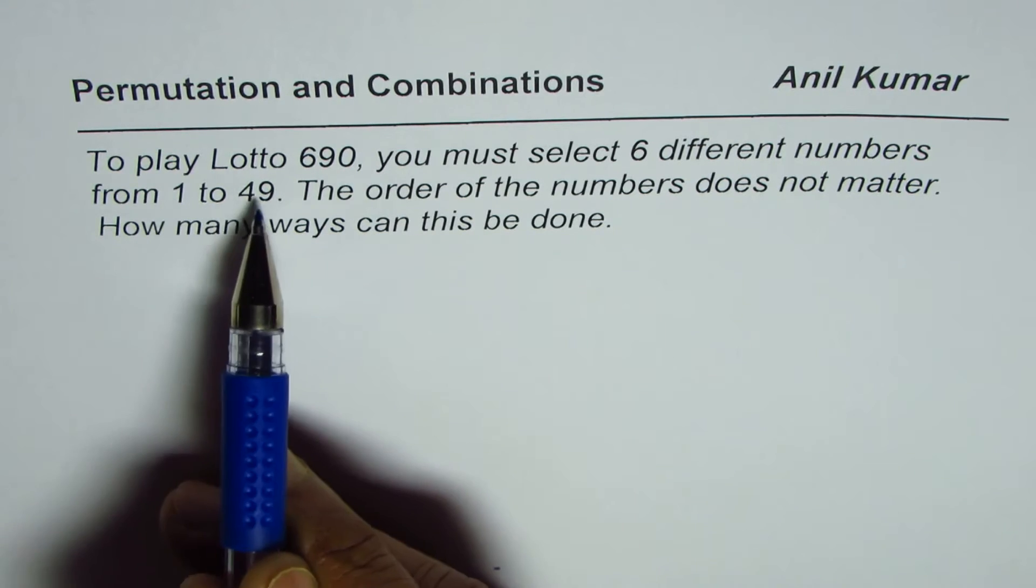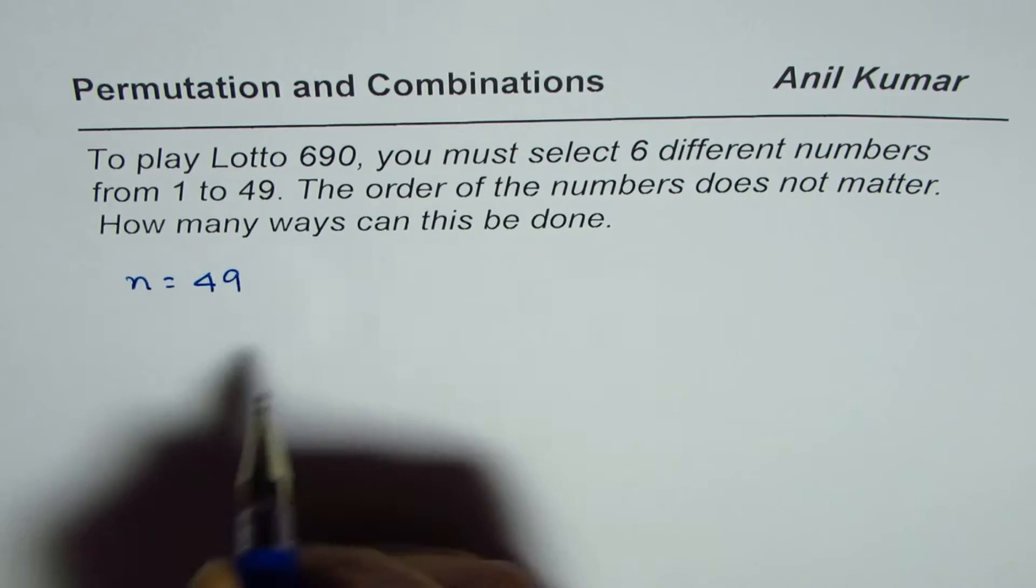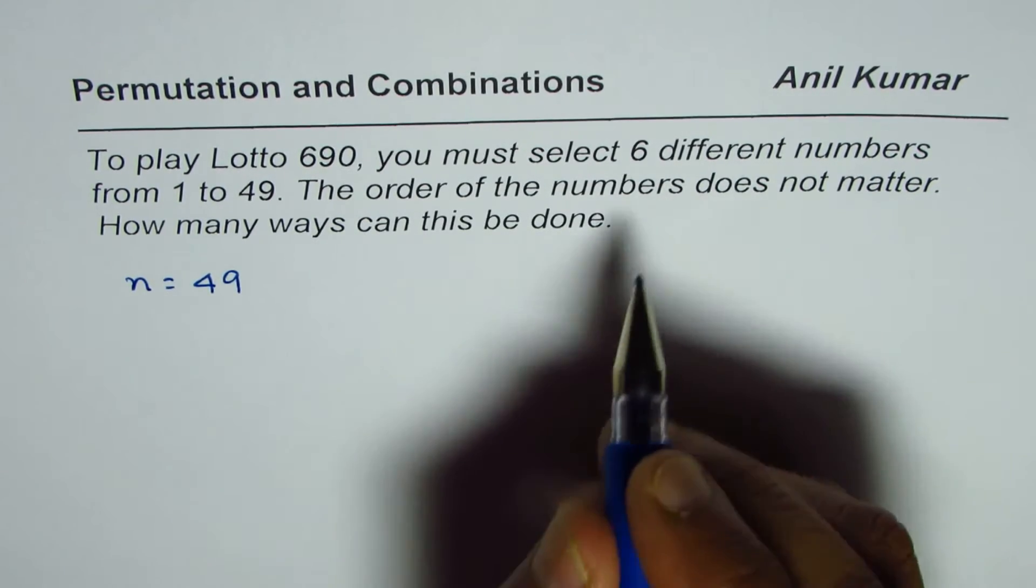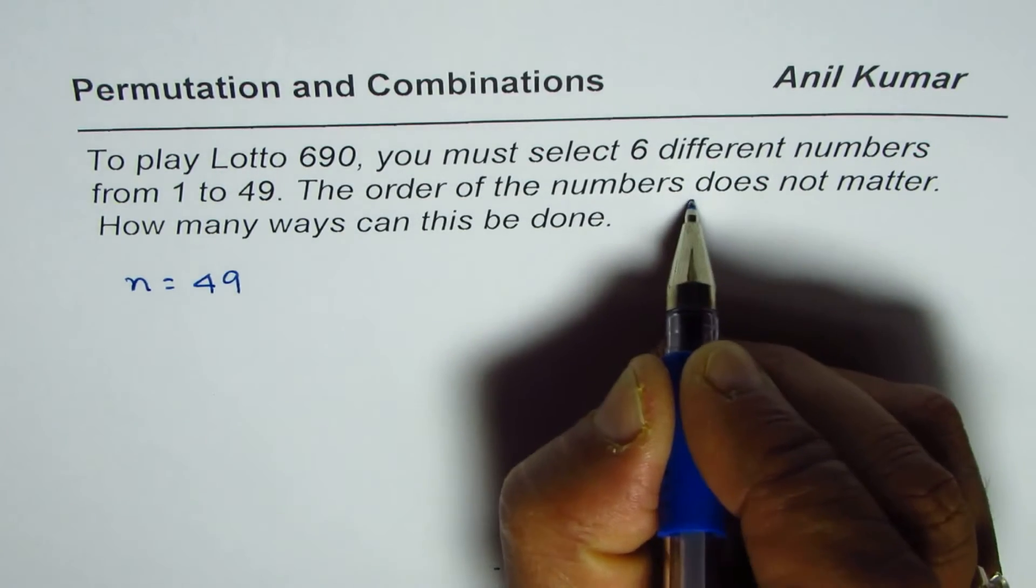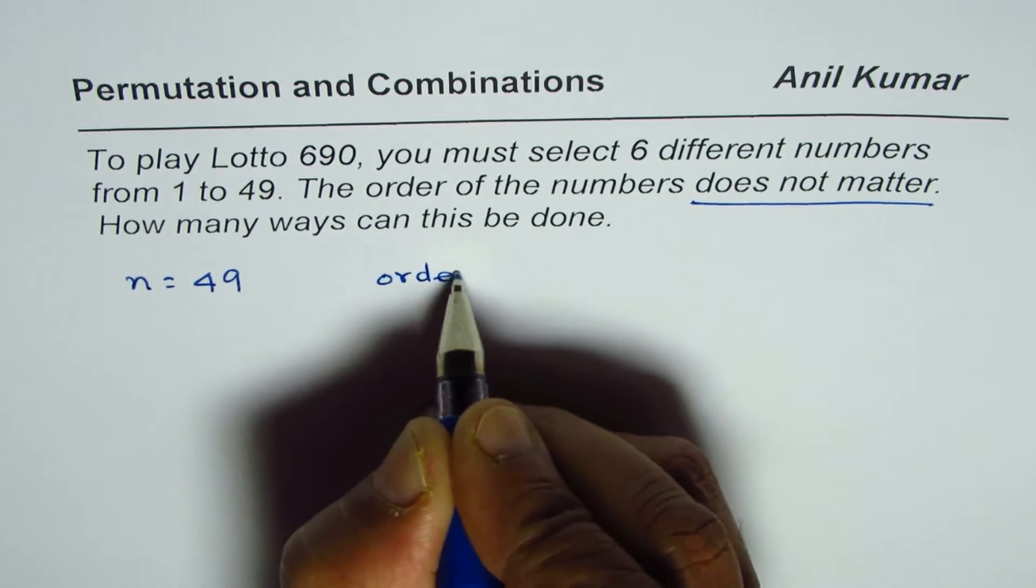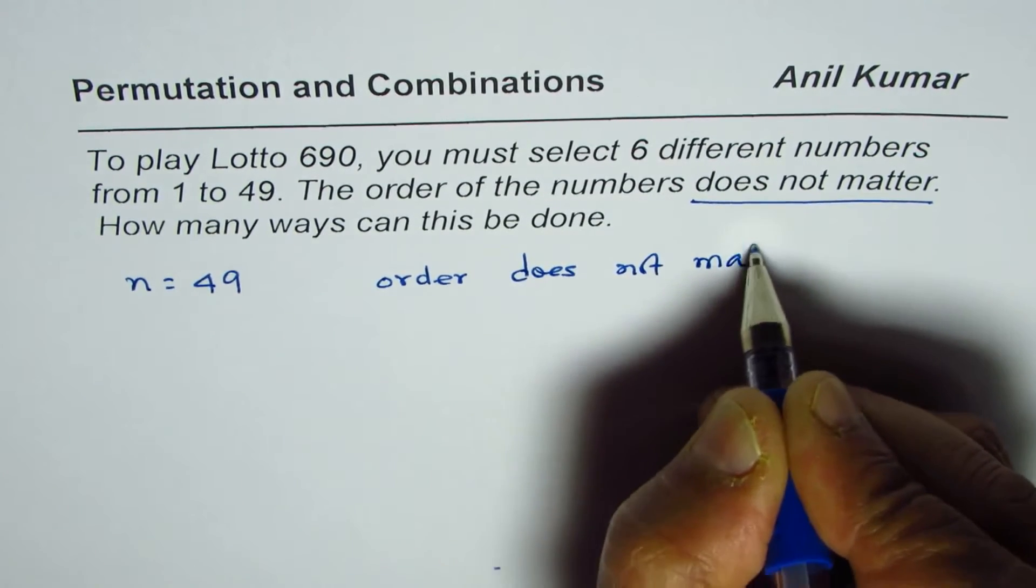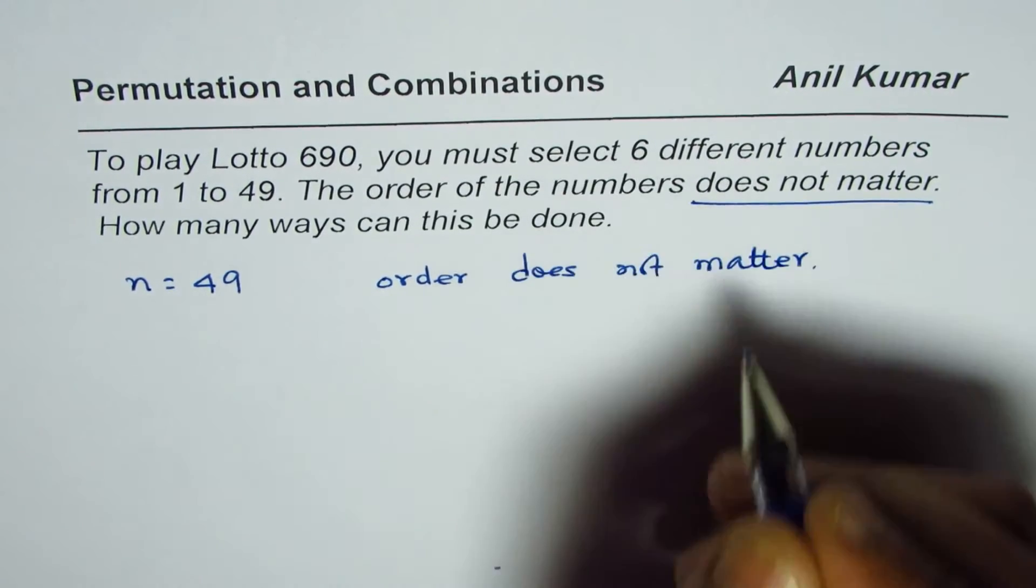In this case, we have 49 numbers. So n is equal to 49 and we know that order does not matter. Order does not matter, right? Therefore, we should use combination.